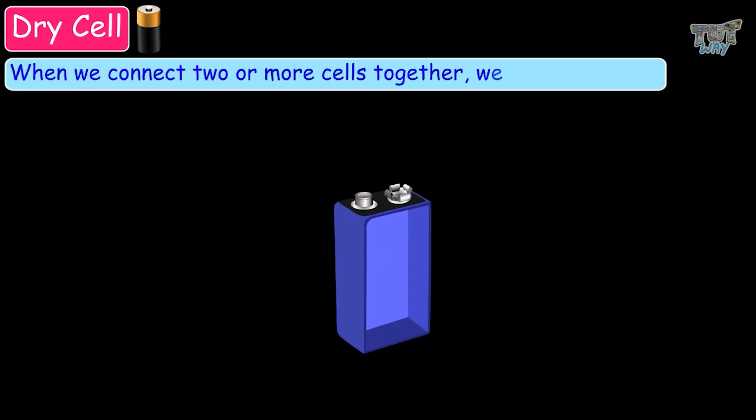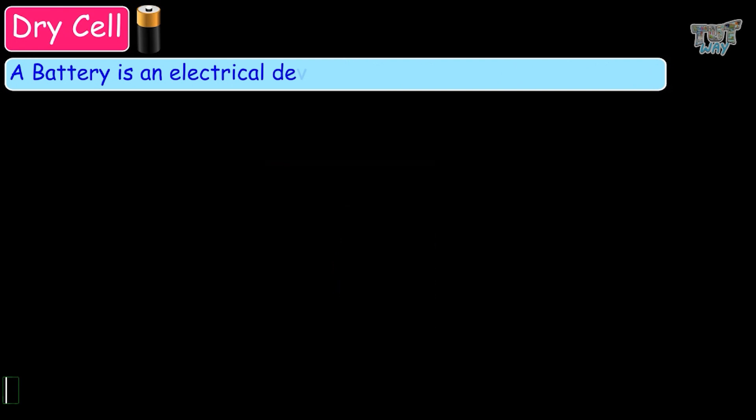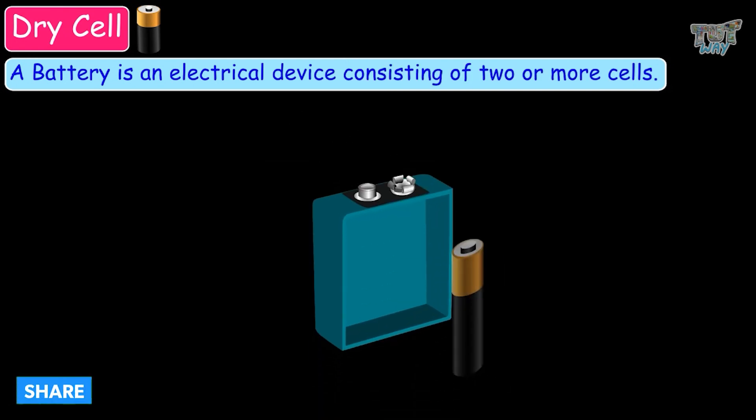When we connect two or more cells together, we get a battery. So a battery is just a combination of two or more cells. Or we can say that a battery is an electrical device consisting of two or more cells.